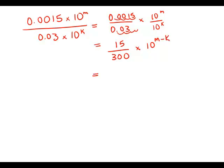Now I'm going to separate this fraction into 15 over 3 times 1 over 100 times 10 to the m minus k. Well, the 15 over 3, that's just 5. So what I get is 5 times 10 to the negative 2 times 10 to the m minus k.